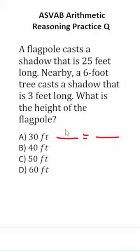Let's start with the tree. We know the tree is six feet tall, and it casts a three-foot-long shadow. We don't know the height of the flagpole, so put an X there to represent that unknown value. But we know its shadow is 25 feet long.